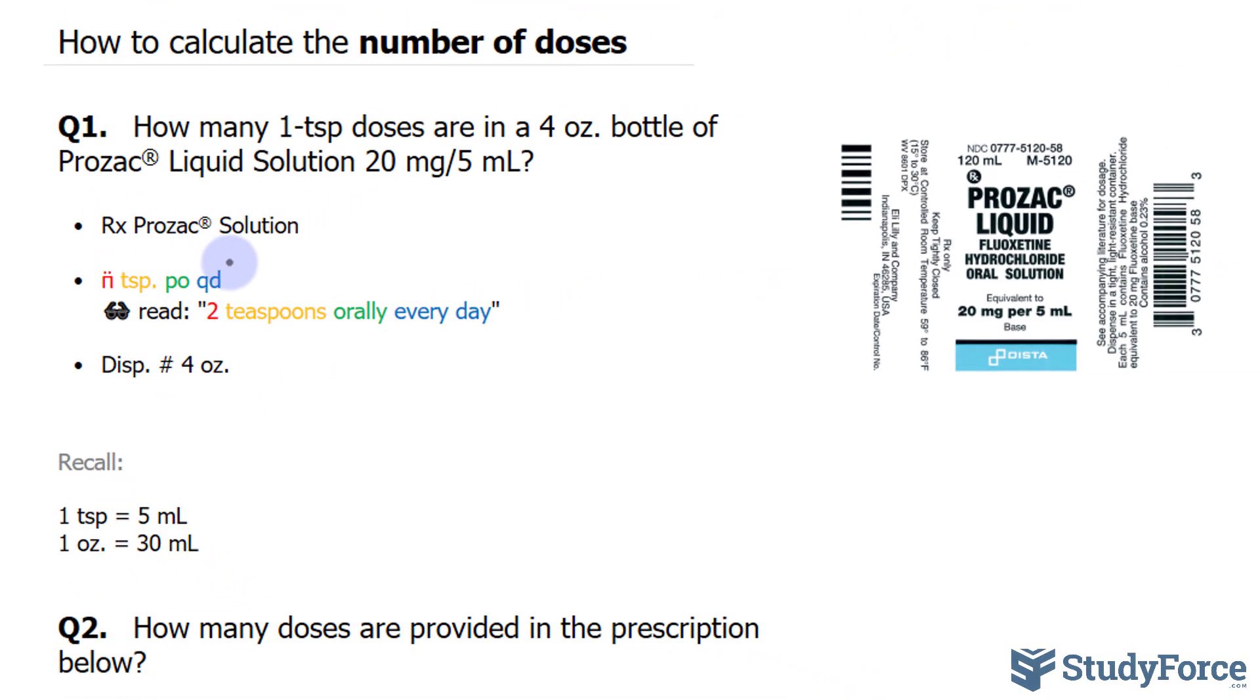So we want to find out how many one teaspoon doses are in a four ounce bottle of Prozac. The first thing we have to do is determine which information presented here is actually applicable to the question. If you read through this a couple of times, you'll notice that this question is actually quite simple. All they're asking is how many doses make up the total amount being dispensed.